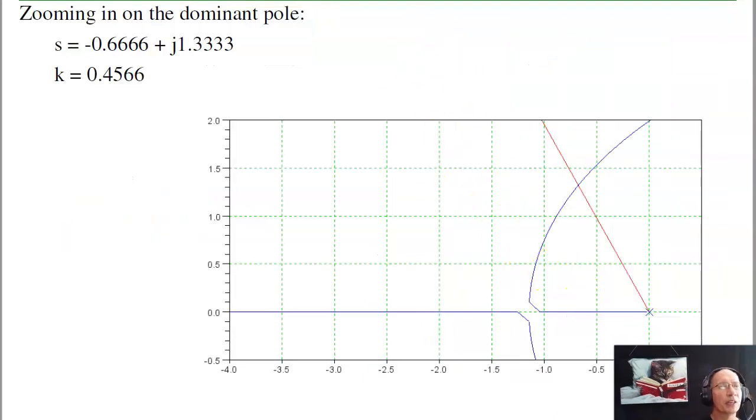If I zoom in on that part of the graph, I can find the point where it crosses at minus 0.66 plus j1.33. At that point, make the gain 1. Evaluate g times delay at this point. I should get 180 degrees. The gain will be off. Pick k to make the gain 1.